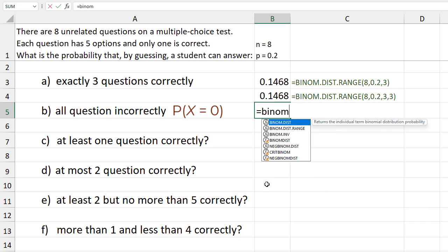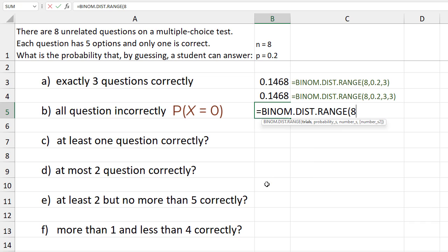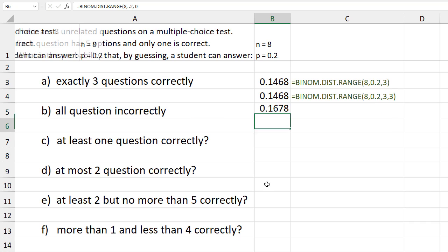So equals BinomDistRange, 8, comma, 0.2, comma, 0. I'm going to drag down the formula text function for that too.